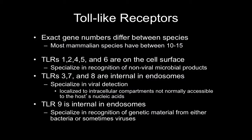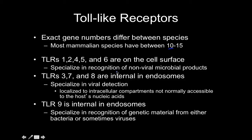For purposes of this course, there are 10 toll-like receptors. TLRs 1, 2, 4, 5, and 6 are all on the cell surface, so they're really good at recognizing anything that is not a viral or intracellular pathogen. For TLRs 3, 7, and 8, these are internal and usually located on the endosomes. Since they're internal, they're really good with viruses and other intracellular pathogens.